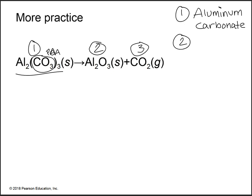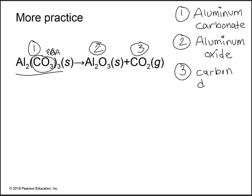The second compound is ionic — metal plus nonmetal — making it a binary ionic compound. We name the cation first: aluminum. Then the anion: take the first syllable of oxygen and add -ide, giving us oxide. For the third compound, it's a binary molecular compound because there are two nonmetals. We name the first element — carbon — then use the prefix di for two oxygens, take the first syllable ox, and add -ide: dioxide.